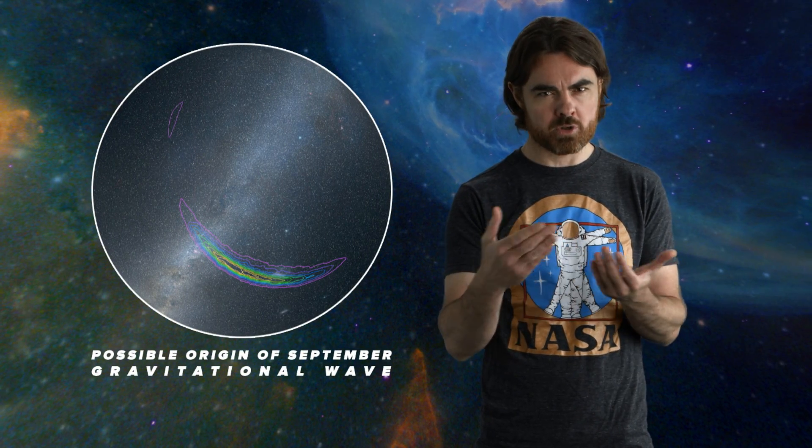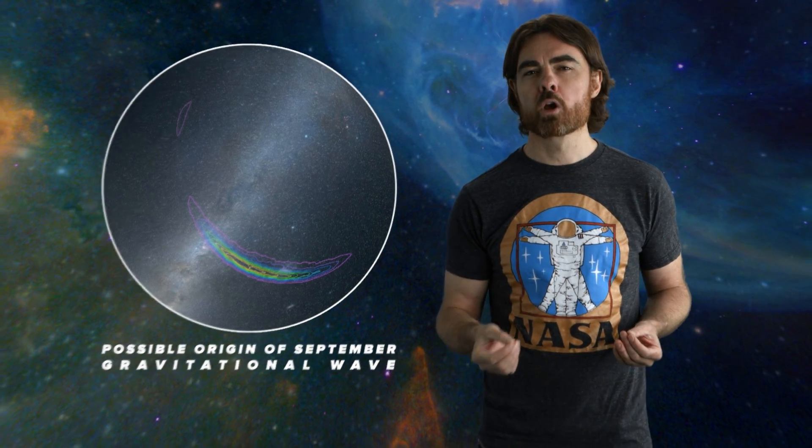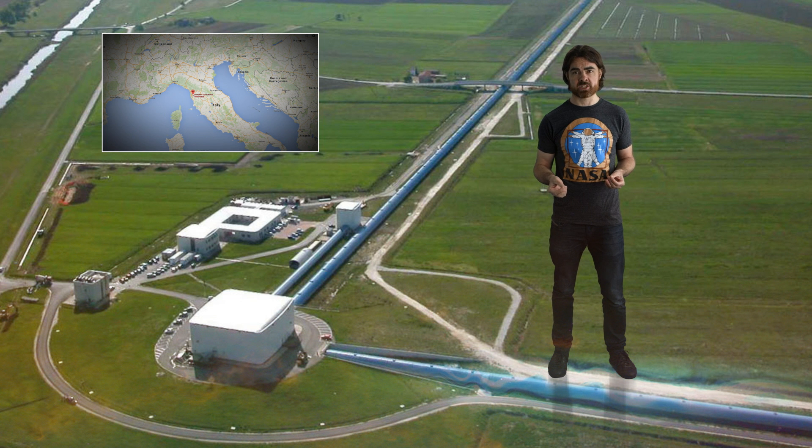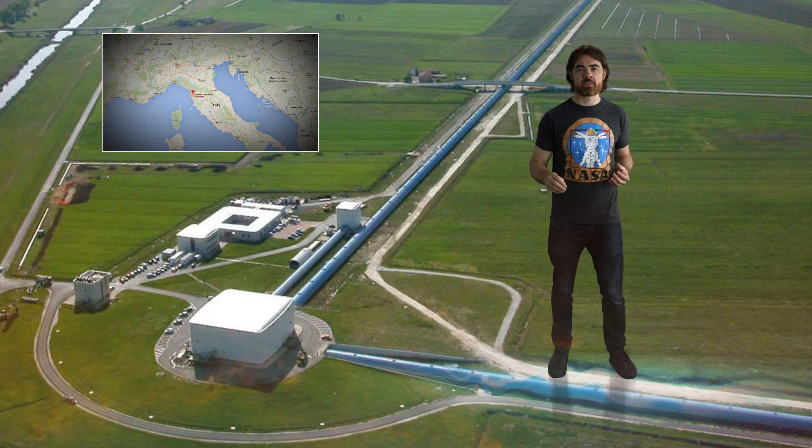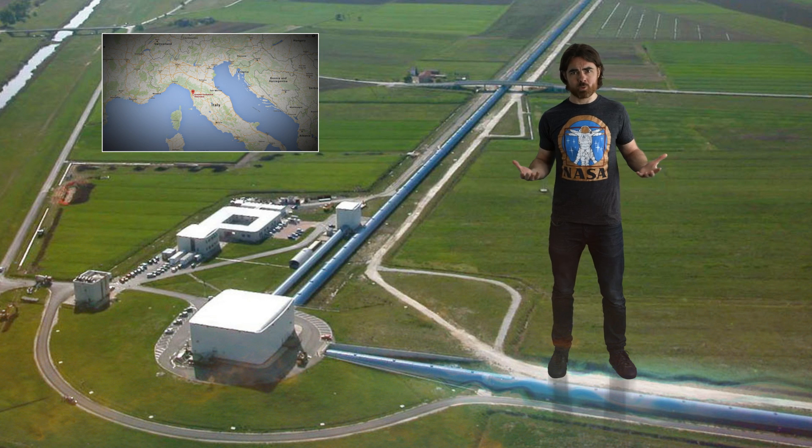At the moment LIGO isn't particularly good at figuring out the direction that the wave came from, which is determined by the time difference in the signal between the two detectors. But that only limits us to a long streak across the sky. When the European Virgo comes online later this year, we expect a massive improvement in our ability to locate the source of the waves. Then, we can turn all of our telescopes to that spot as soon as a wave is detected. Who knows what we'll see?